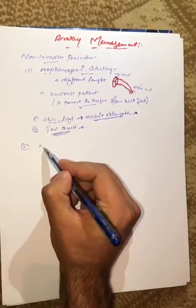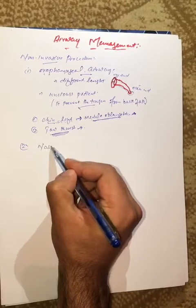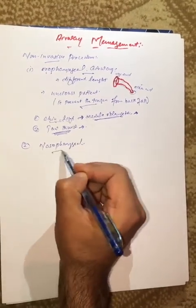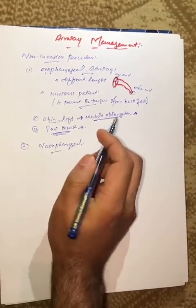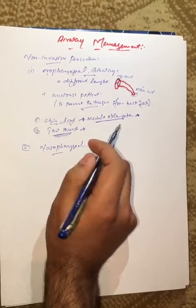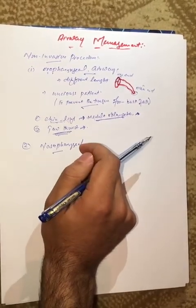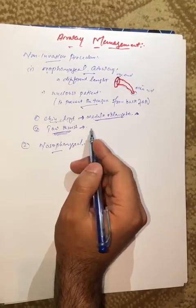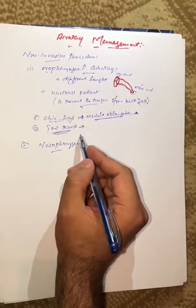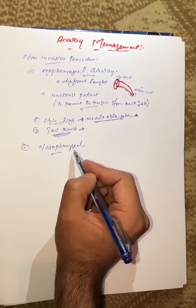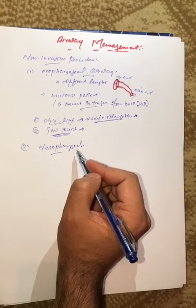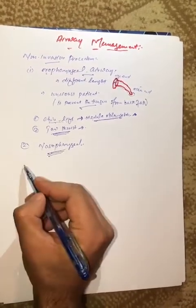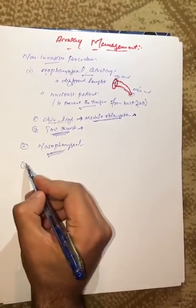The second airway management is nasopharyngeal airway management. Nasopharyngeal airway management is done in the patient when oropharyngeal is contraindicated. It is also used just to hold the tongue and prevent tongue fall. This is the second non-invasive airway management.